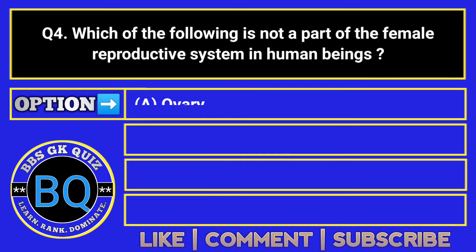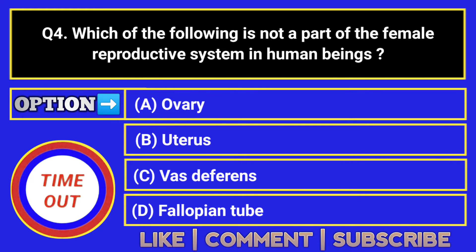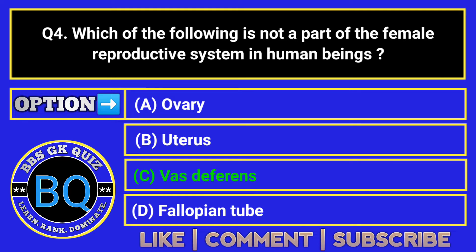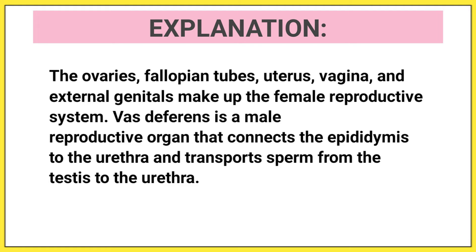Which of the following is not a part of the female reproductive system in human beings? The correct answer is Option C. The ovaries, fallopian tubes, uterus, vagina, and external genitals make up the female reproductive system. The vas deferens is a male reproductive organ that connects the epididymis to the urethra and transports sperm from the testis to the urethra.